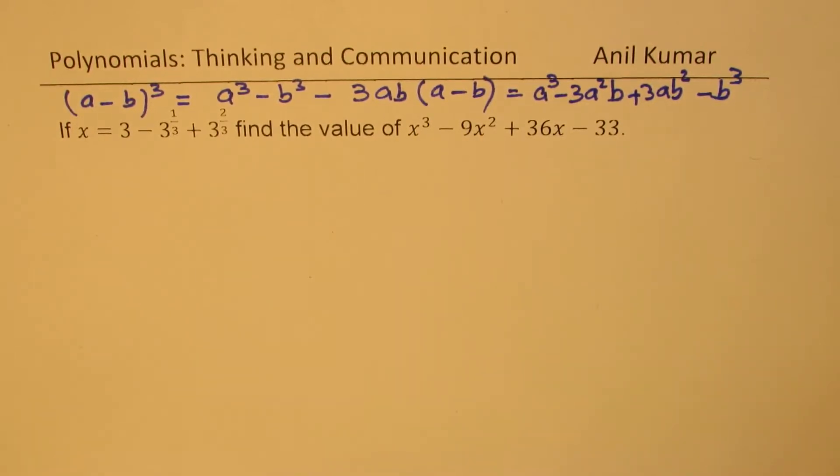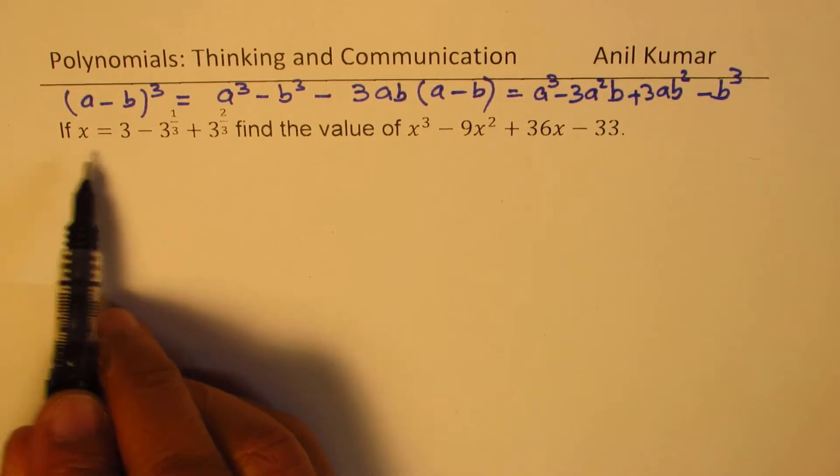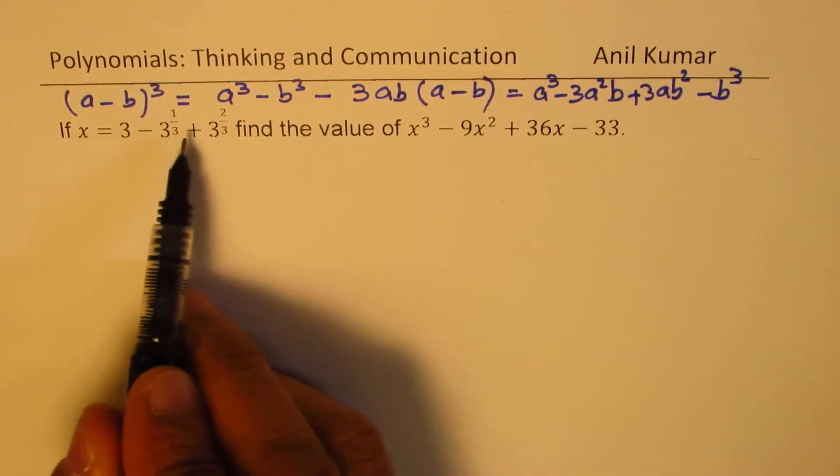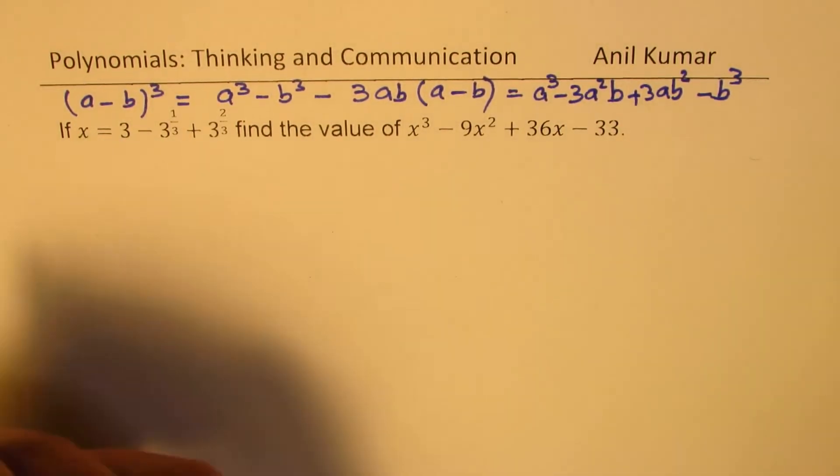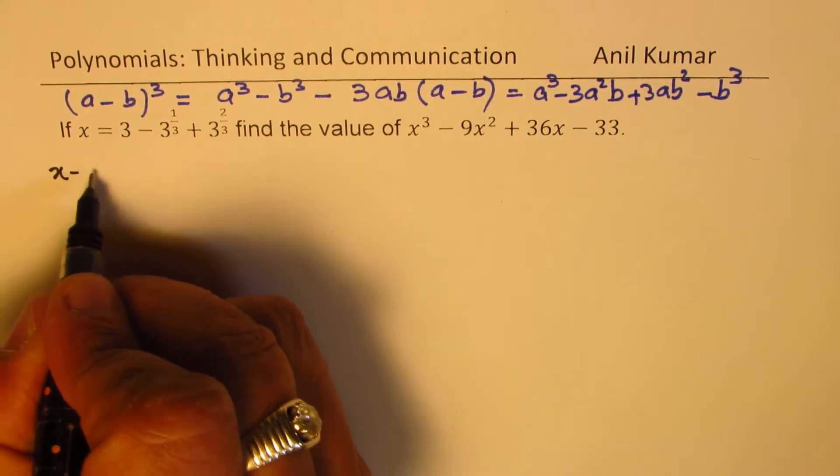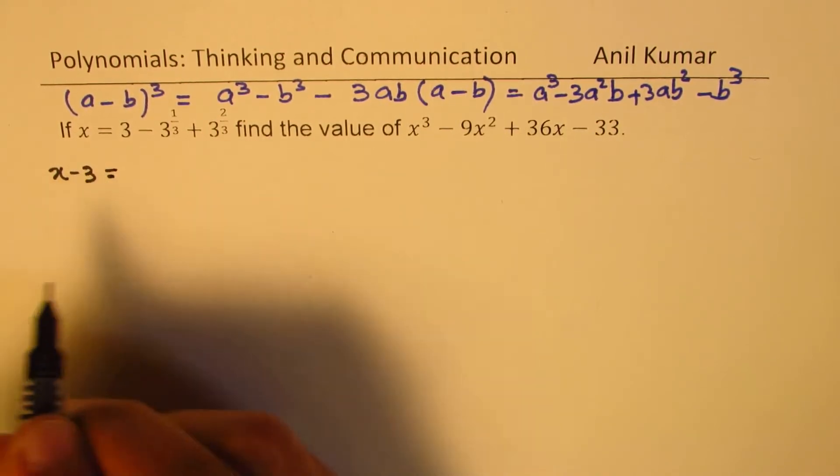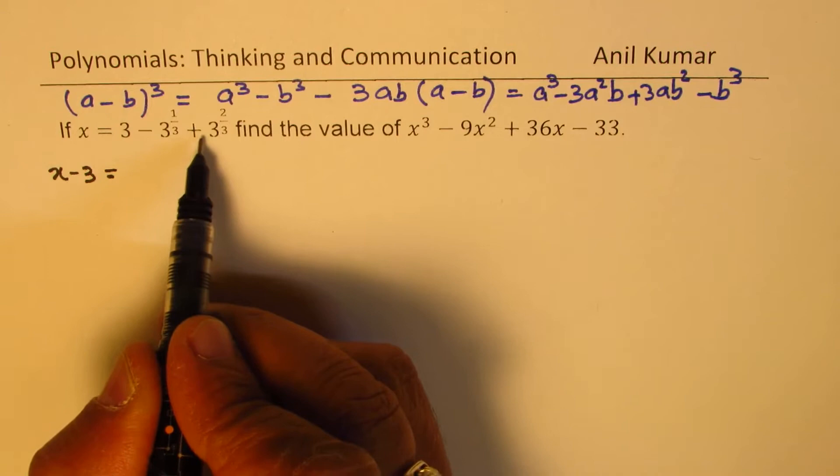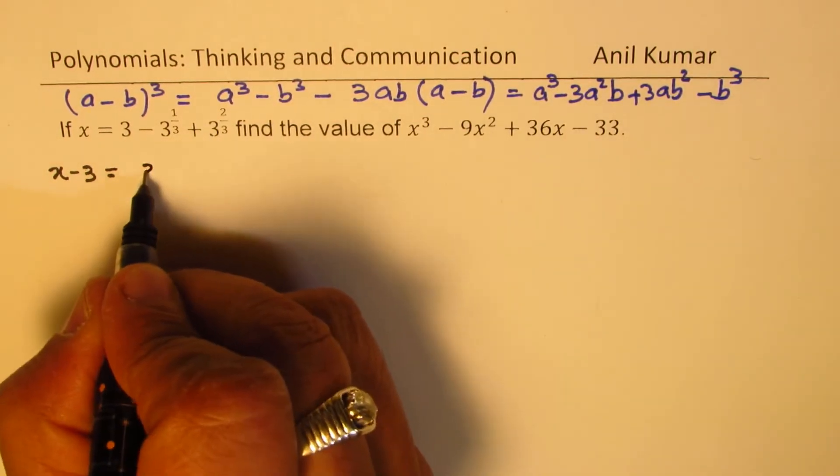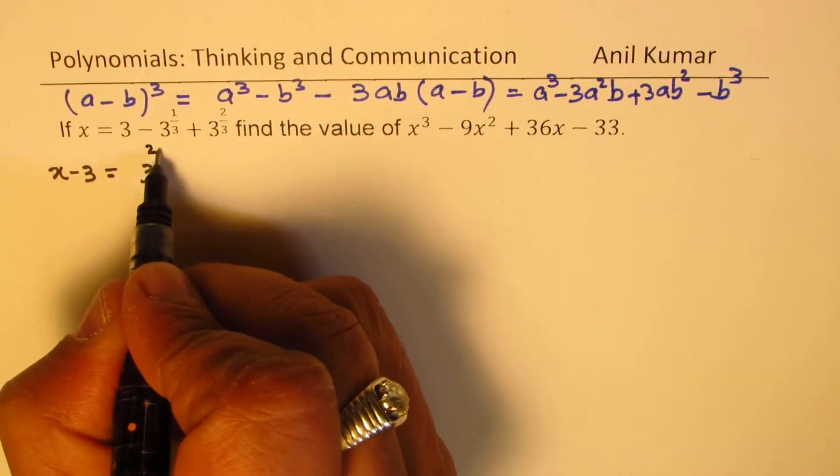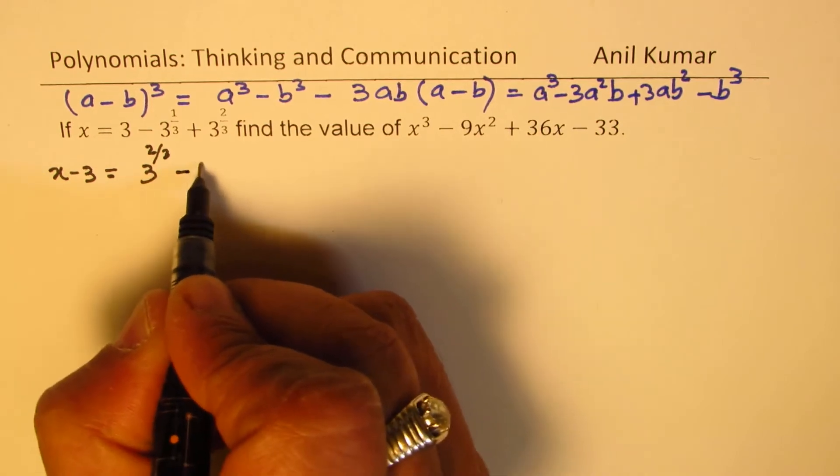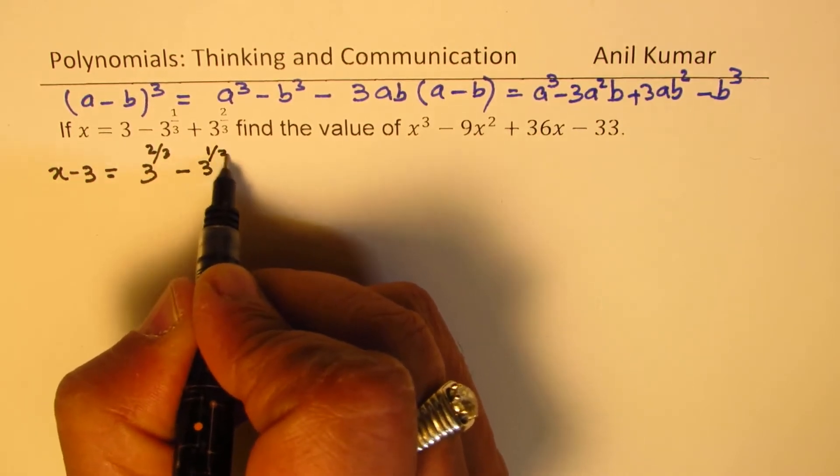Now let us see how to solve it. We're given x is equal to 3 minus all this. We can take 3 to the left side, and so we get x minus 3 equals 3 to the power of 2 over 3 minus 3 to the power of 1 over 3.